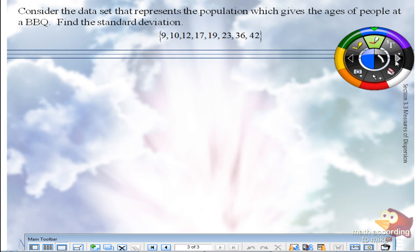Consider the data set of the population, which gives the ages of people at a BBQ. Find the standard deviation. I'll record all the steps, so it'll have the notes in here as well.